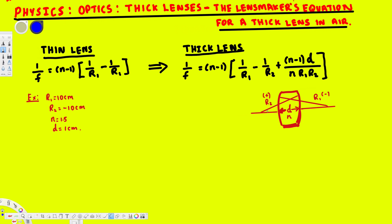R1 is the radius of curvature of the front side, and R2 is the radius of curvature of the back side. R1 should be positive and R2 should be negative. Here R1 is 10 cm and R2 is minus 10 cm. n is the index of refraction and d is the distance between the curvatures, given as 1 cm. For a thin lens, d is considered zero, which is why the thick lens term — n minus 1 times d over n times R1 times R2 — does not appear in the thin lens formula.